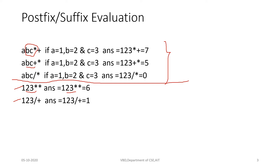If I have an expression like abc star plus, and I assign a equals 1, b equals 2, and c equals 3, the answer will be equal to 7. First we multiply 2 into 3, which equals 6, and then 1 is added, giving a total of 7. So the postfix expression is a string of characters containing operands and operators, and the output is a single integer value. For the first three expressions with alphabetical values, you need to substitute values for the variables before evaluating.